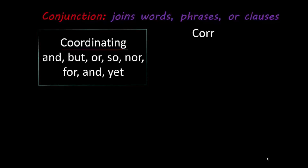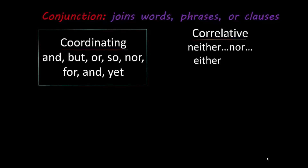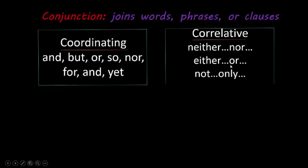Next, there are correlative conjunctions. Three examples would be neither/nor, either/or, and not only. An important note: for neither/nor, you don't want to drop the 'n' — do not say 'neither or,' it needs to stay 'neither nor.' Same with either/or — don't say 'either nor.' Keep it neither/nor or either/or.